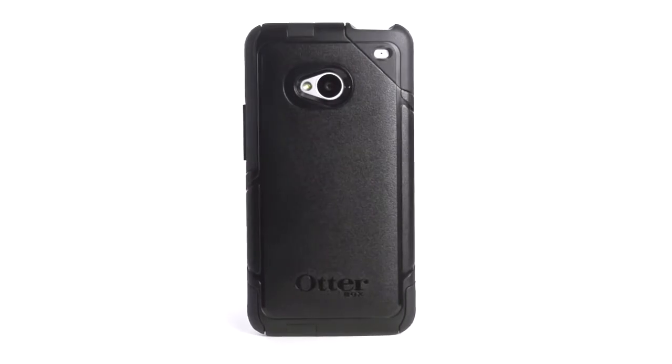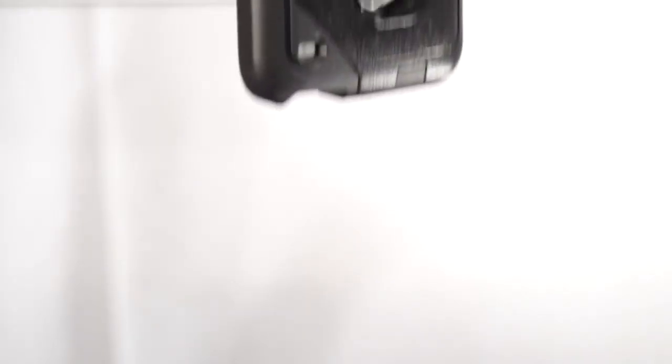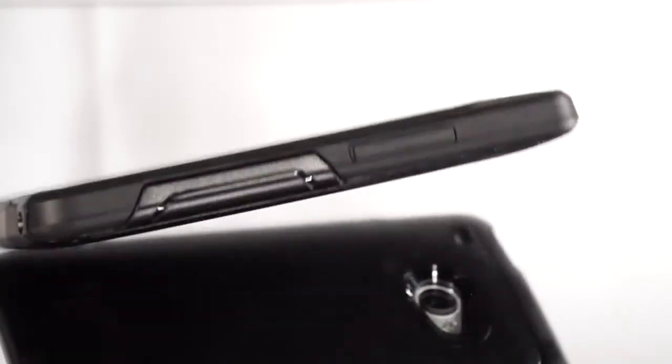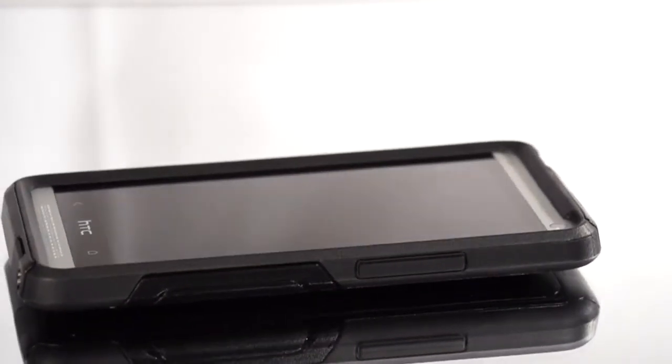When you take a closer look at the Commuter Series for HTC One, you'll see that it is more than just a case. The exterior shell provides a solid impact-deflecting structure and a slick surface that makes the case highly protective while allowing for instant, on-the-go access.